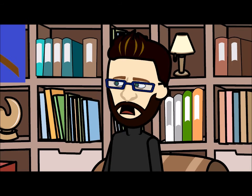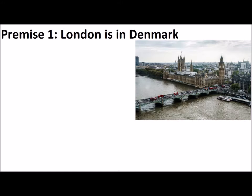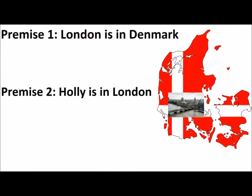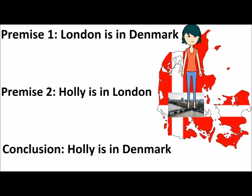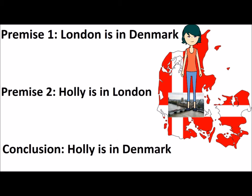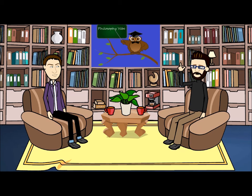Now let's change this to show you an argument that is not sound. Premise one: London is in Denmark. Premise two: Holly is in London. So conclusion: Holly is in Denmark. This argument is not sound. However, it is a valid argument — the conclusions logically follow the premises. If London was in Denmark and Holly was in London, then Holly would be in Denmark. However, the reason it is not sound is because the premises are not true, because as we know, London is not in Denmark.